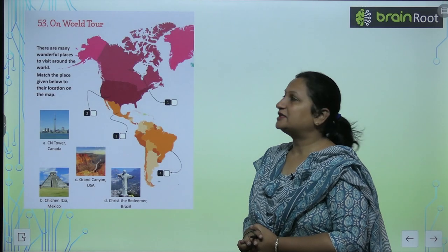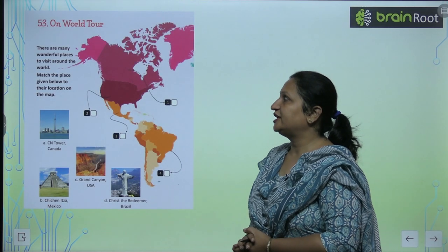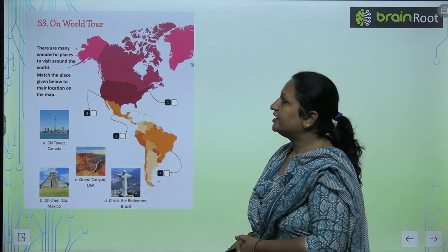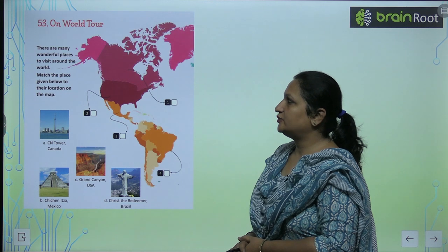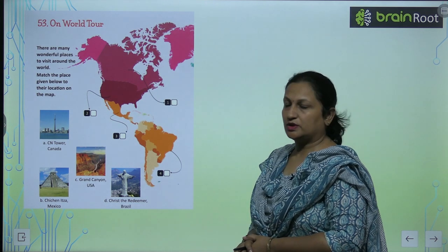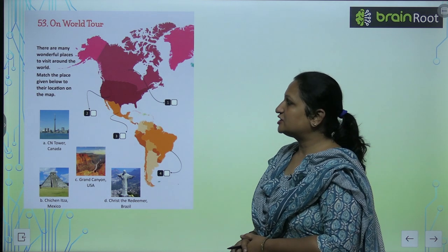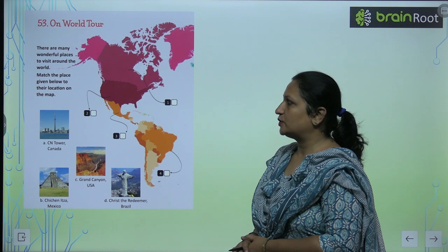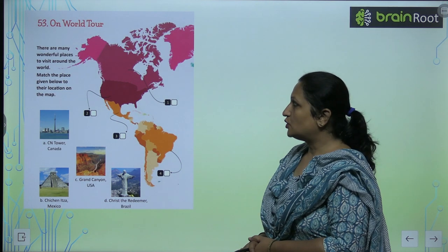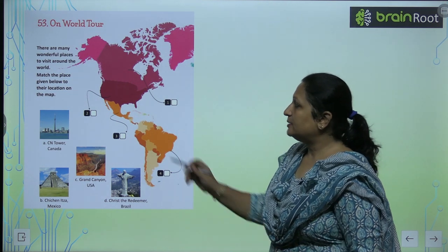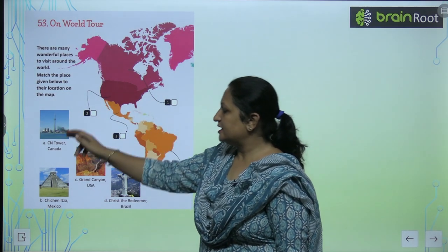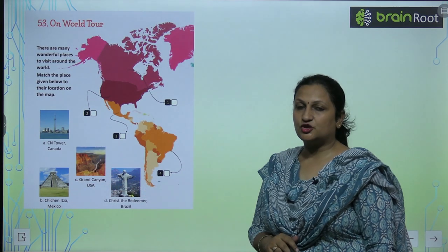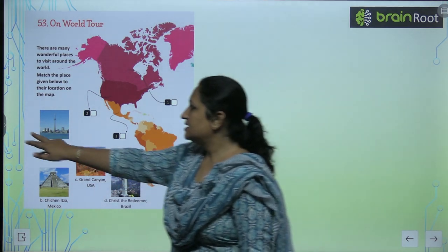Children, let's start with chapter number 53 on World 2. There are many wonderful places to visit around the world. Match the places given below to their location on the map. We have to match the famous places to their locations.